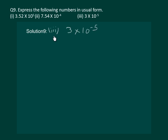Let us proceed with the third part of the same question. This can be rewritten as 3 into 1 by 10 raised to the power of 5, or we can also write it as 3.0 whole divided by 10 raised to the power of 5. We have to shift 5 places. That means we will get 0.00003 as the required answer.